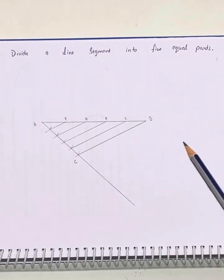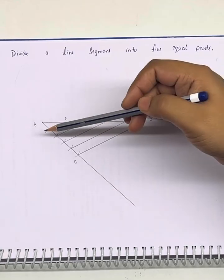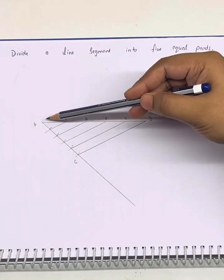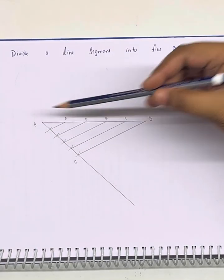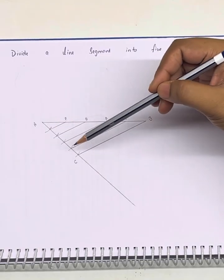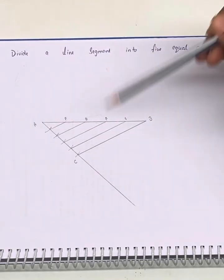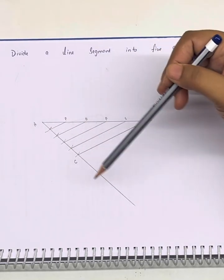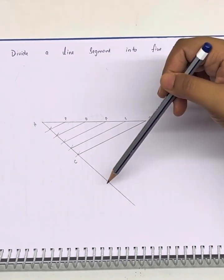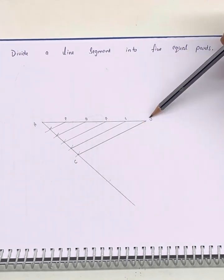Similarly, if we need to divide a line in three equal parts, we will divide our reference line, the line inclined to the given line, in three equal parts of any certain length. Similarly for seven parts we will divide it in seven parts and we will join the ends together and draw lines parallel to these lines. Similarly we can divide our line of any length into any odd number of equal parts.